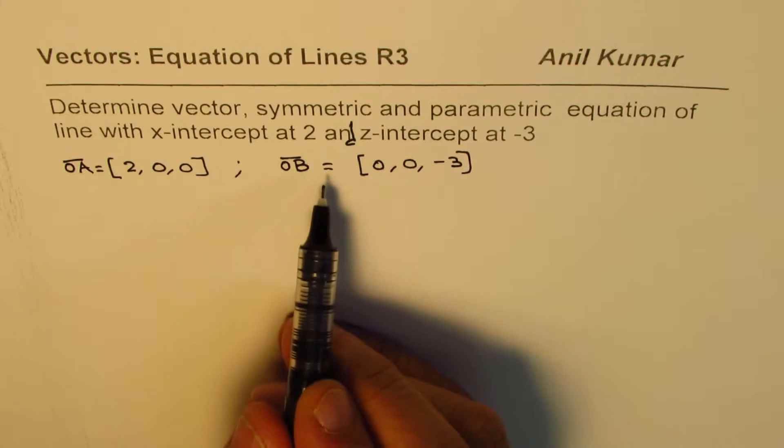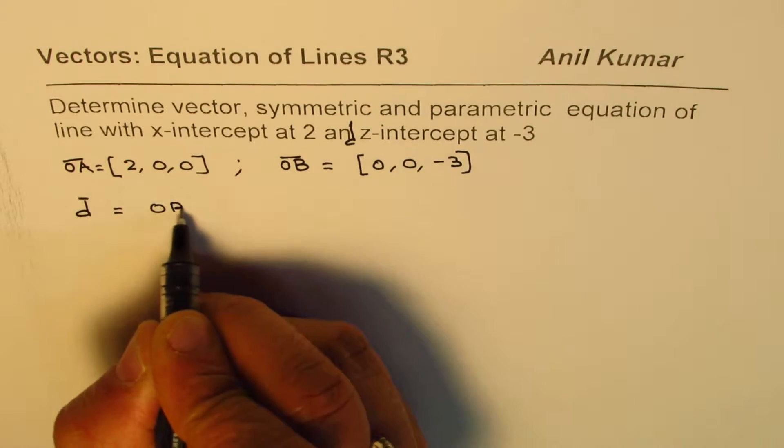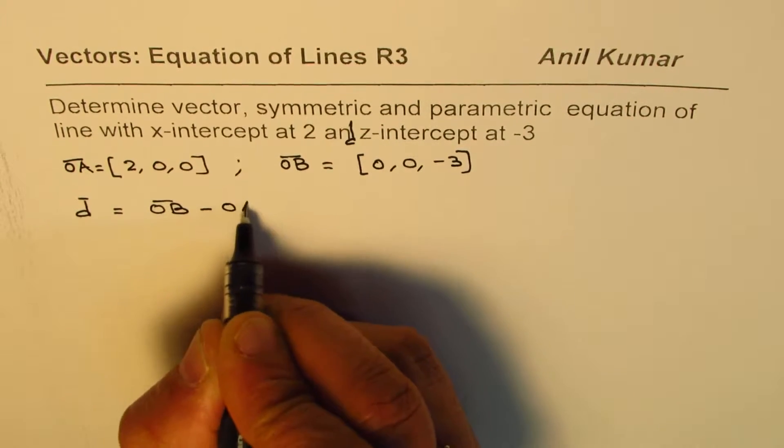from these, we can find the direction vector. So, let's say direction vector D is OB minus OA, right?